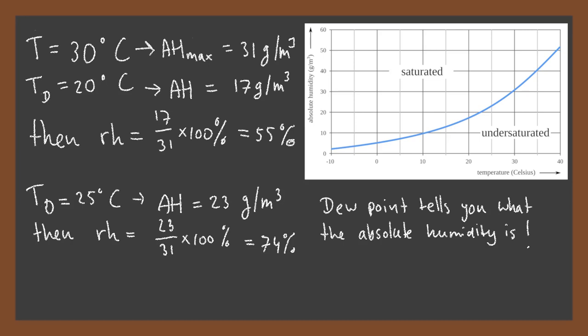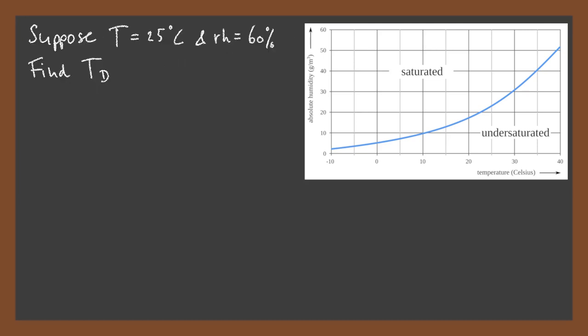You can also find the dew point if you know the relative humidity. Suppose the temperature is 25 degrees Celsius and the relative humidity 60%. Find the dew point. From the graph it follows that the maximum absolute humidity is 23 grams per cubic meter. Remember, this is the maximum amount of water vapor in the air before net condensation occurs. Now the relative humidity is 60%, so the actual amount of water vapor in the air equals 60% from 23 grams per cubic meter equals 13.8 grams per cubic meter. From the graph you can find the corresponding temperature, which is 17 degrees Celsius. This is the dew point.